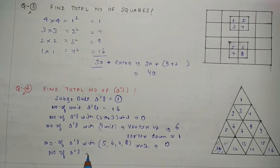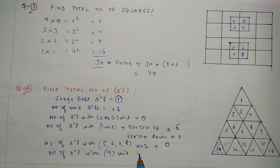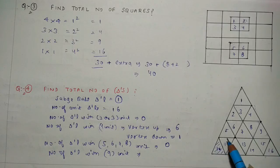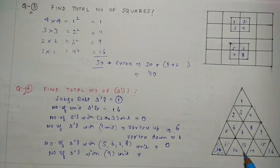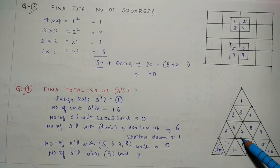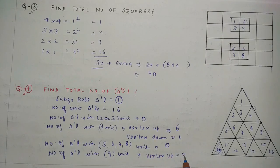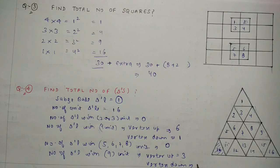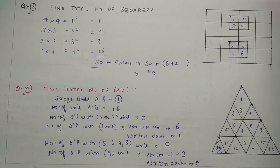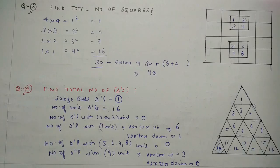Then number of triangles with 9 units — 1, 2, 3, 4, 5, 6, 7, 8, 9 — so 1 triangle of 9 units can be formed, and then another one. Beyond 9 units we cannot calculate further triangles in this figure. So adding all triangles: 1 (biggest) + 16 (unit) + 0 (2-3 units) + 6 (4 units, vertex up) + 1 (vertex down) + 0 (5-8 units) + 3 (9 units) = therefore the answer is 27.